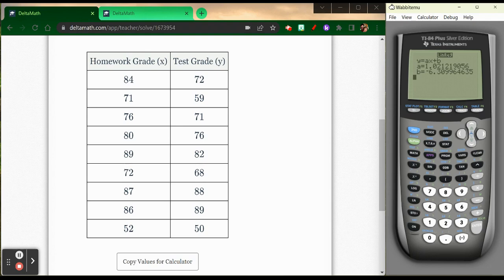And there we go. Y equals AX plus B. That's the format for my equation. And it tells me A is equal to 1.021219056, B is equal to negative 6.309964635.